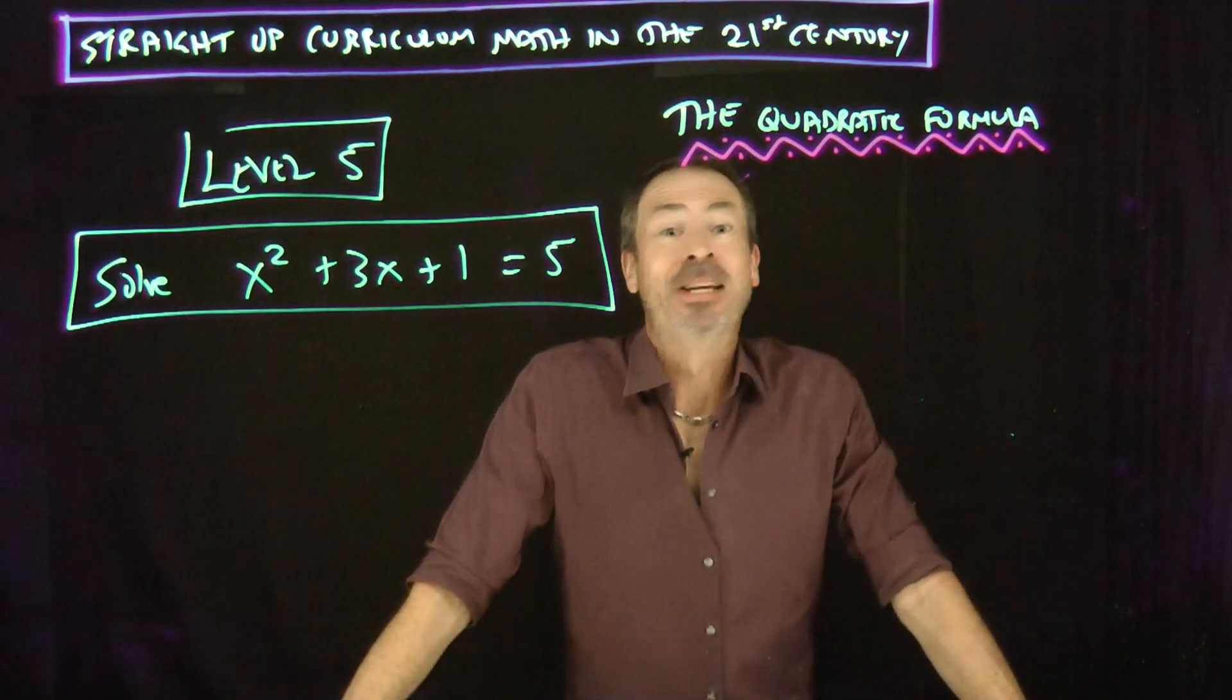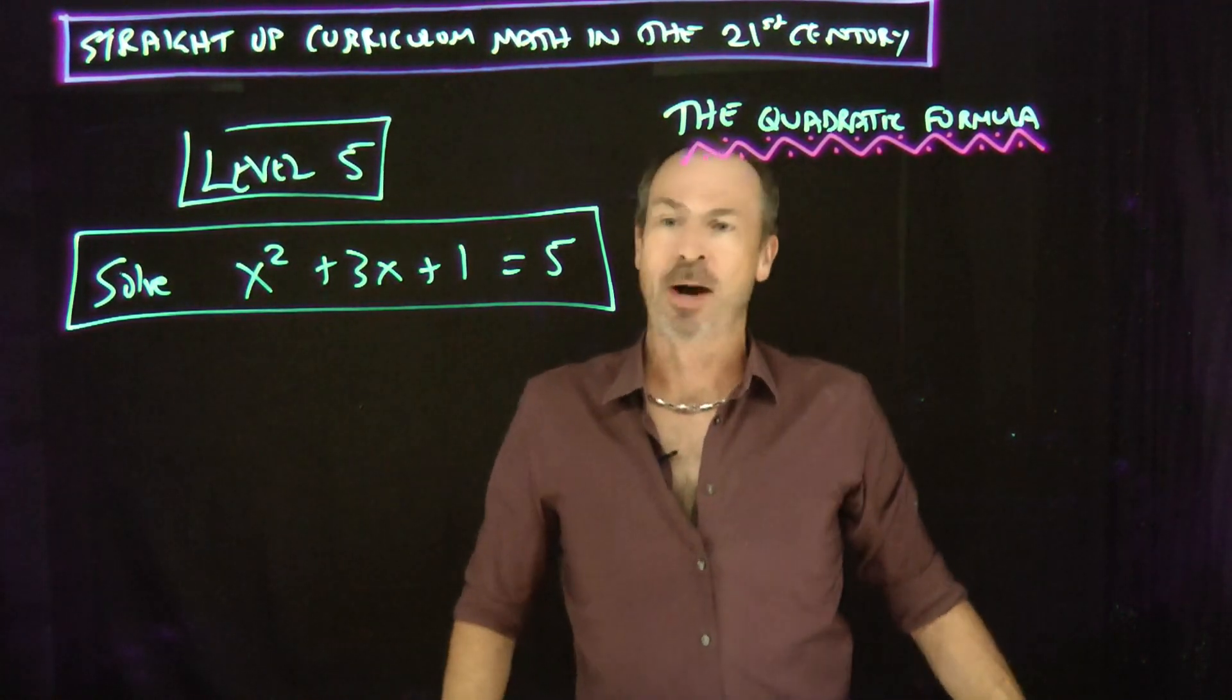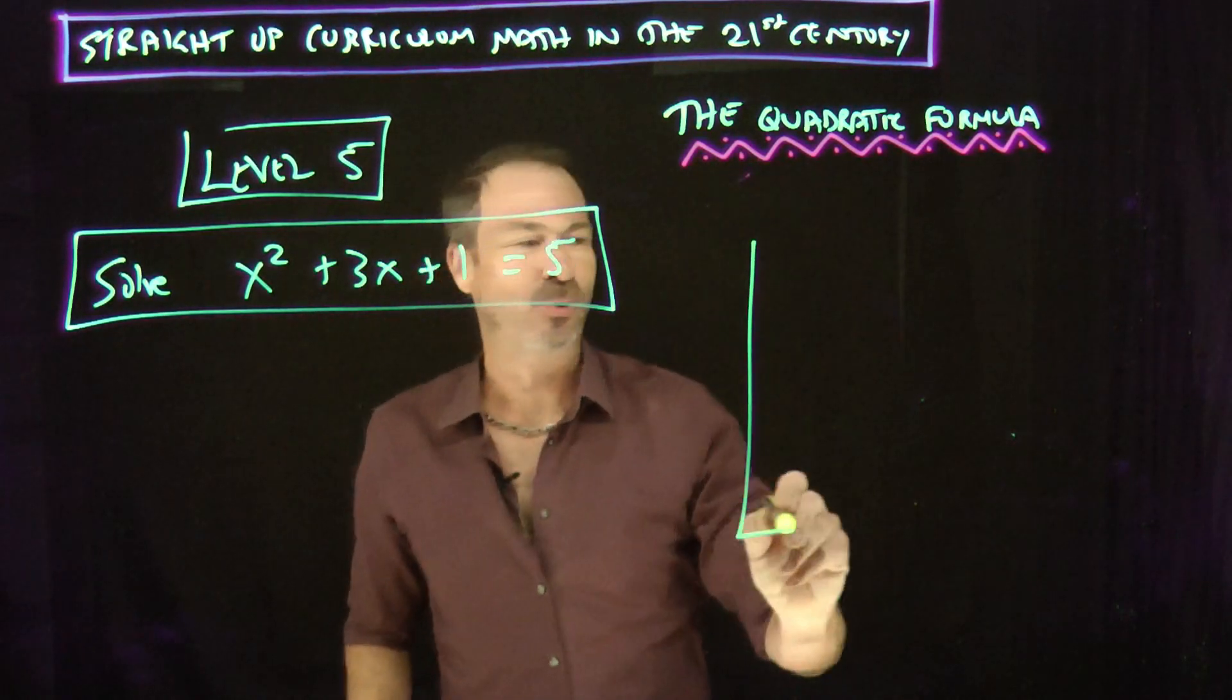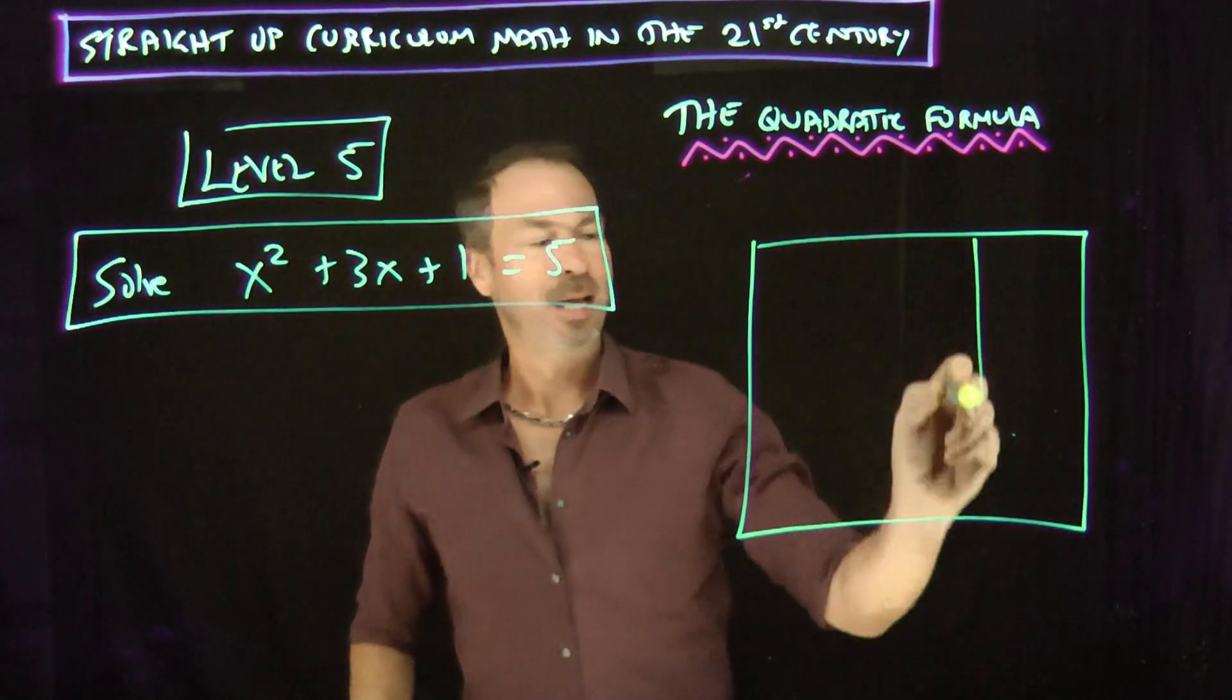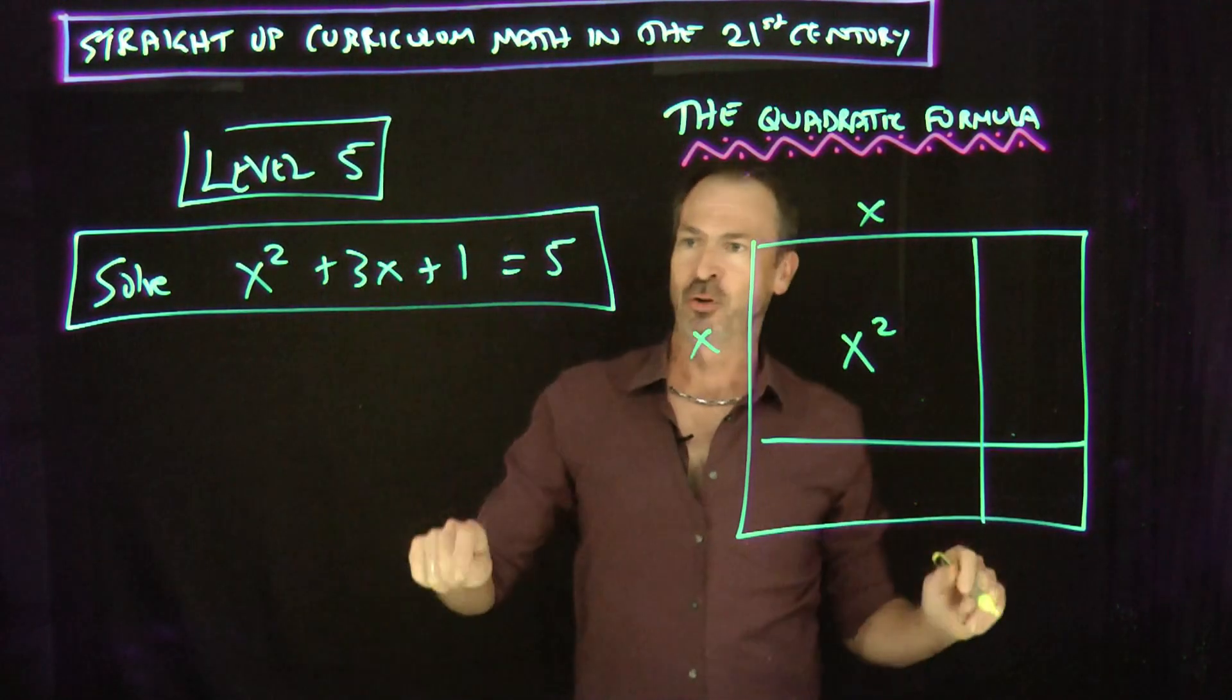Okay. Welcome to level 5. And it kind of looks like the same levels too. Let's solve x squared plus 3x plus 1 equals 5. Piece of cake. Alright. Here it goes. Let's draw the complete symmetrical square. It's going to come in four pieces. One of the pieces is x squared coming from x times x for the sake of symmetry.